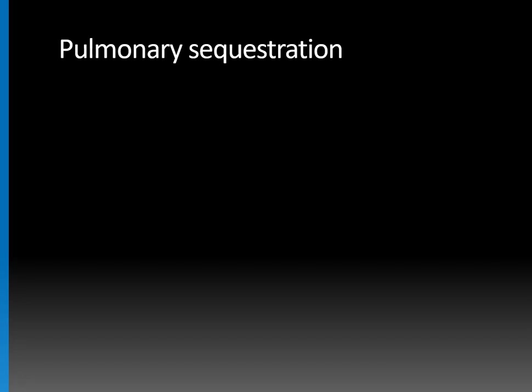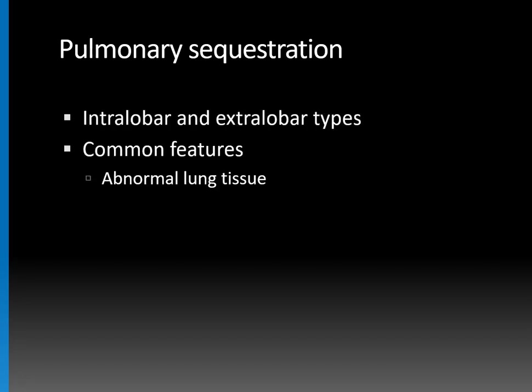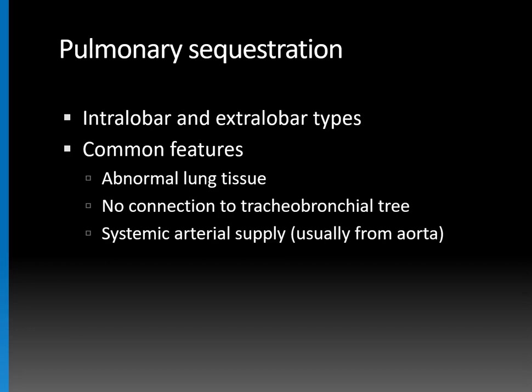Now, what's pulmonary sequestration? Well, there are intralobar and extralobar types, and they have some common features. They both have abnormal lung tissue, and this lung tissue has no connection to the tracheobronchial tree — that's an important feature. They have systemic arterial supply as opposed to pulmonary arterial supply, usually derived from the aorta, like in this case. They're more common in the lower lobes, and even more specifically, the left lower lobe more so than the right. So anytime you have left lower lobe consolidation, you should have this in the back of your mind — could this be a pulmonary sequestration?